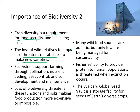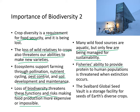Ecosystems support farming through pollination, nutrient cycling, pest control, and soil development and maintenance. The loss of biodiversity threatens these functions and risks making food production more expensive or even impossible. Many wild food sources are aquatic, but only a few are being managed for sustainability, and fisheries' ability to produce protein for the human population is being threatened, especially when extinctions occur. Here's a picture of the Svalbard Global Seed Vault in Norway, which is storing all the seeds for Earth's diverse crop plants.